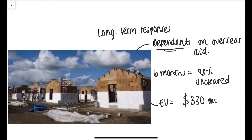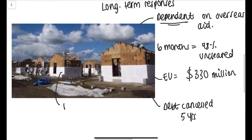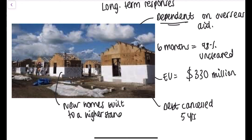With debt repayments waived, Haiti could spend money on rebuilding the country — building houses, businesses, schools and hospitals. New homes were built to a higher standard in case another earthquake occurred. Haiti hadn't experienced an earthquake before, unlike Chile. However, the response in terms of rebuilding houses was quite slow, which means that still, to this day, Haiti is suffering the consequences of that earthquake.